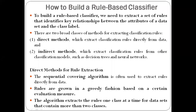In the last class we were discussing about how to build or construct a rule-based classifier. In case of a rule-based classifier, we have a set of rules identifying the relationship between the attributes of the dataset and the class label. To extract such rules, we have two methods: the direct method, where we extract classification rules directly from the given dataset, and the indirect method, where we extract rules from other classification models like decision tree induction algorithms or neural networks.